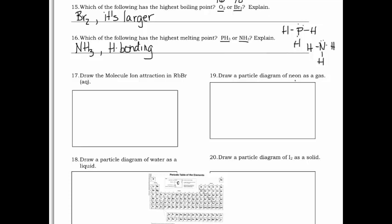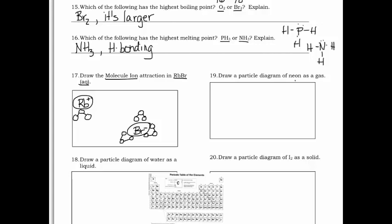Now we'll draw a molecule-ion attraction diagram. This is when you have an ionic substance — in this case RbBr — dissolved in water, which is what the (aq) indicates. Take your metal ion with its charge and your non-metal ion with its charge. Orient at least three water molecules around each ion. Since bromine is negative, the hydrogen side of the water molecules points toward the bromine ion. Since oxygen is more negative, the oxygen side points toward the rubidium ion.